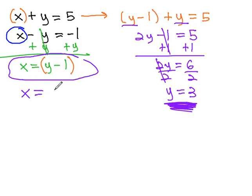So, x equals y, which we just found out to be three minus one, x must equal two.